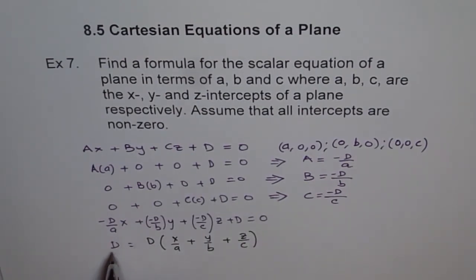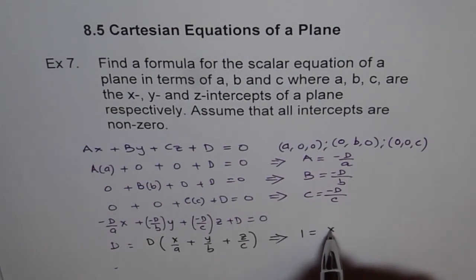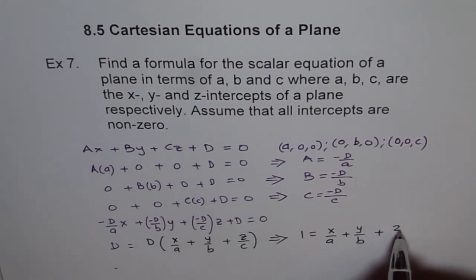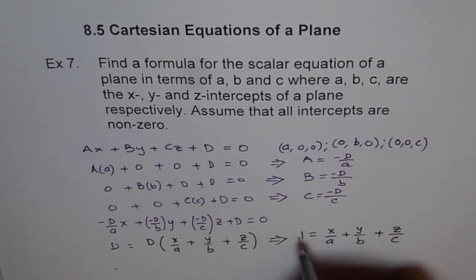Now I can divide D by D and once I do that, what do I get? If I divide D by D, I get 1 equals to X over A plus Y over B plus Z over C. So that is the equation which we can form and which could represent our scalar equation.